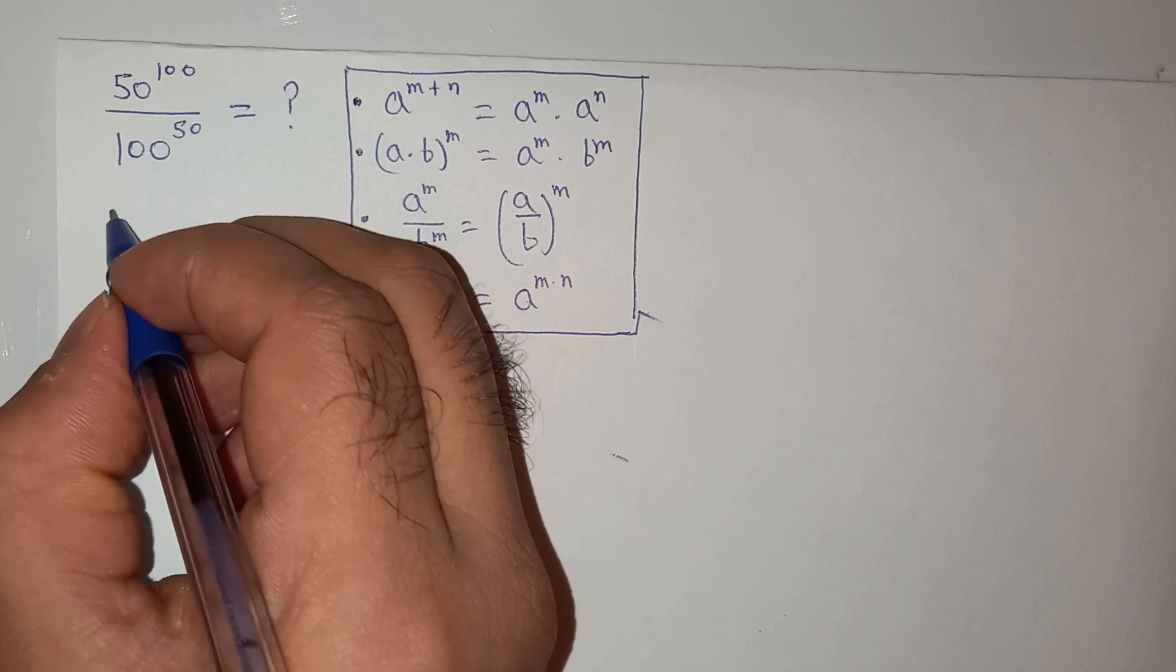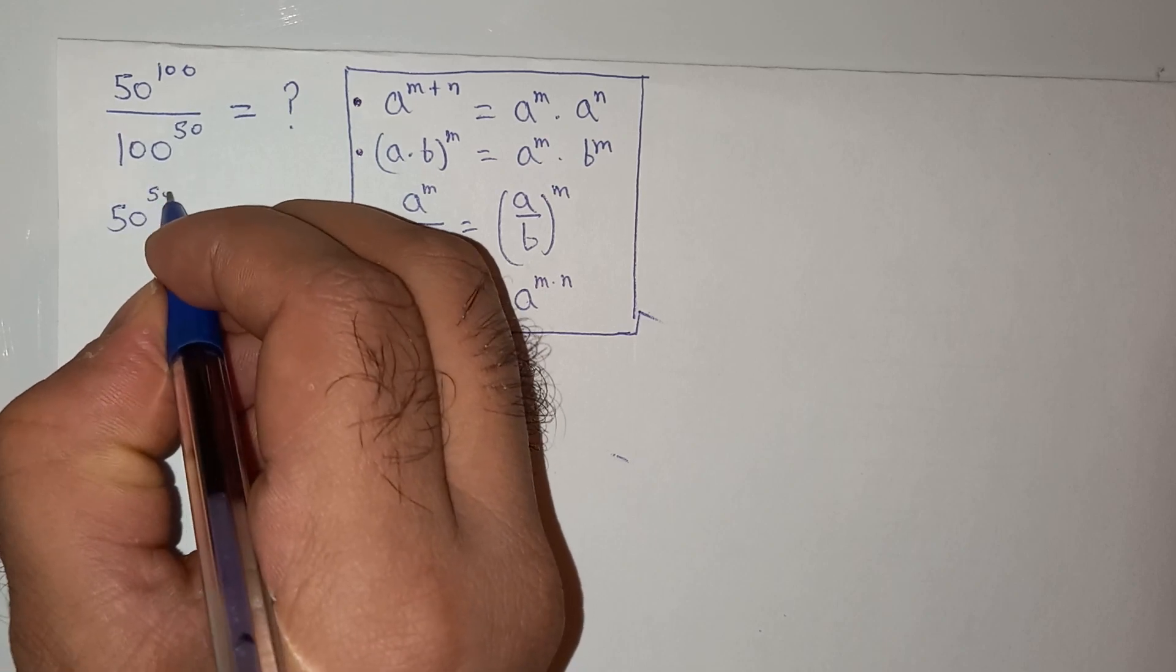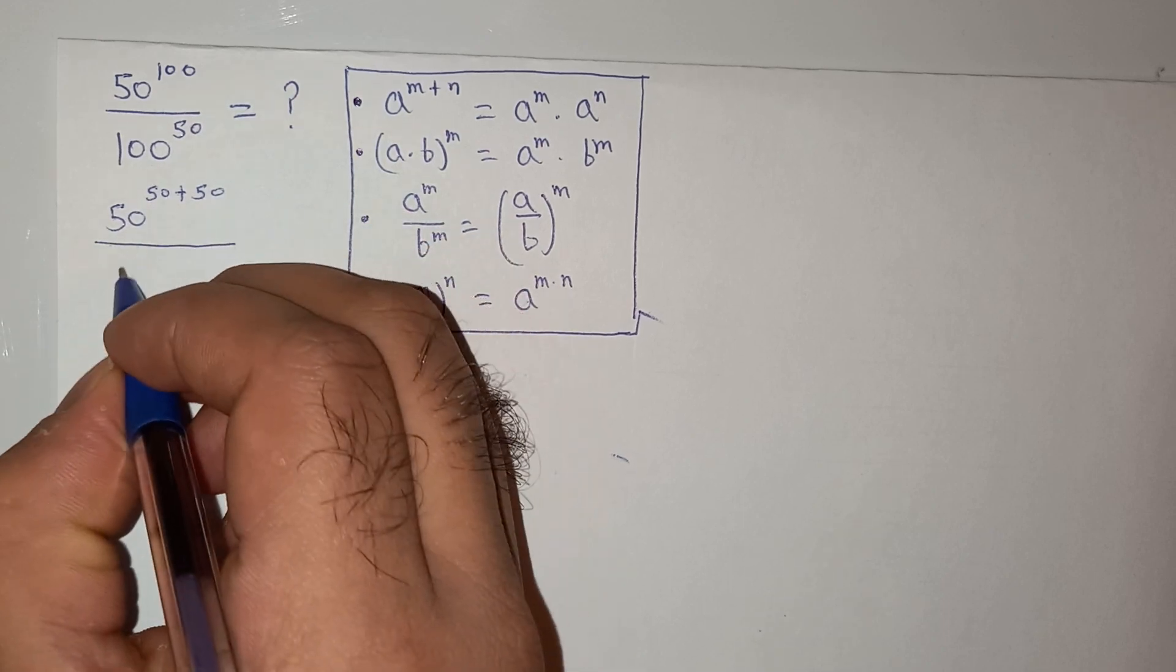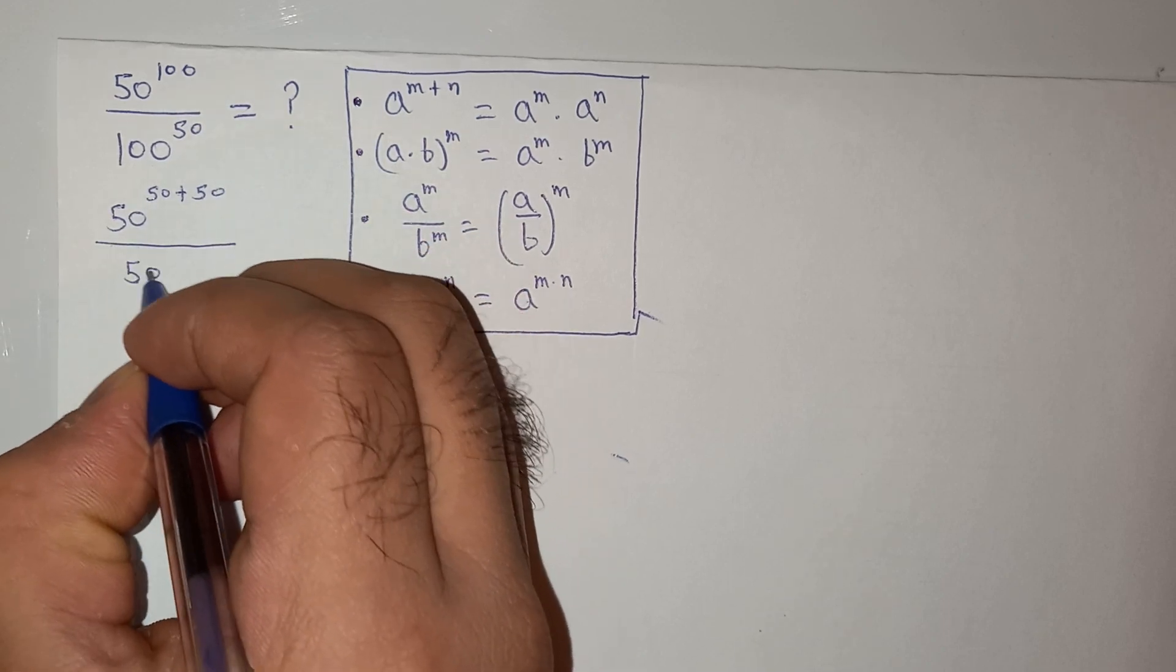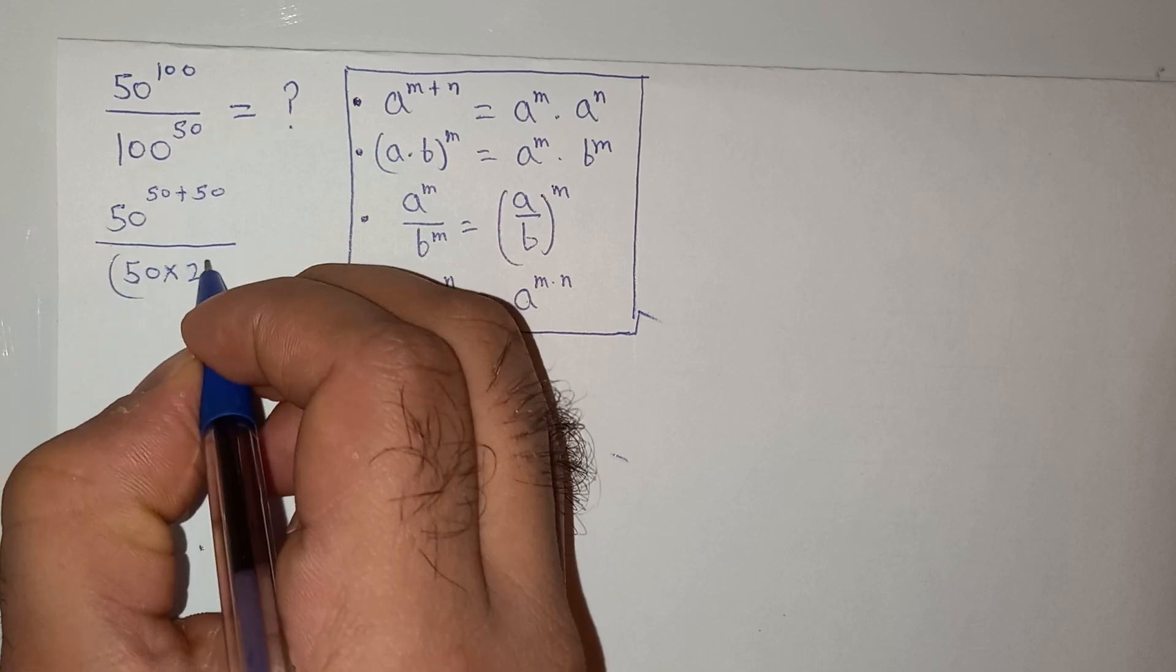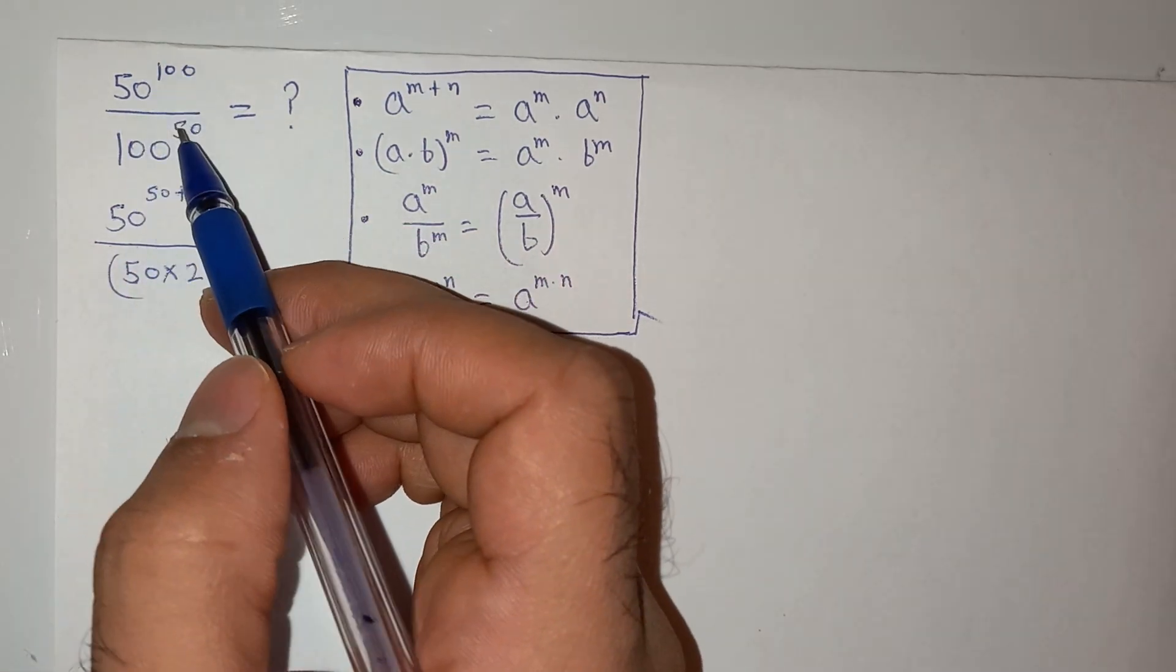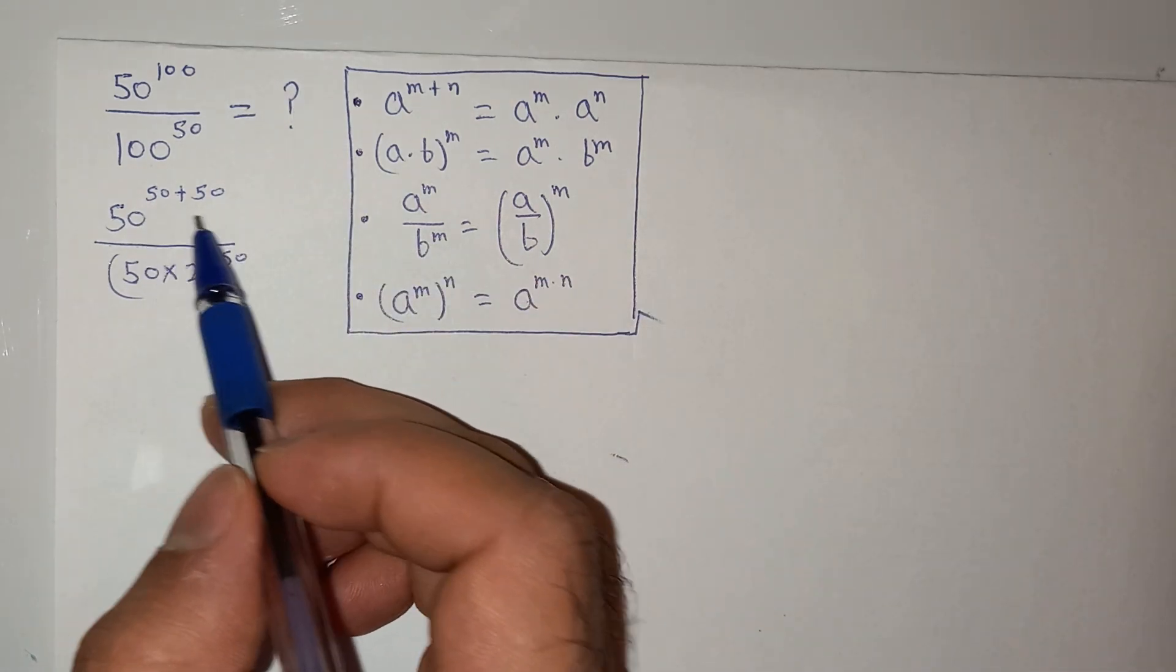I can write this as 50 power 50 plus 50 divided by 50 multiplied by 2 power 50. So I have converted this term in the terms of 50s only.